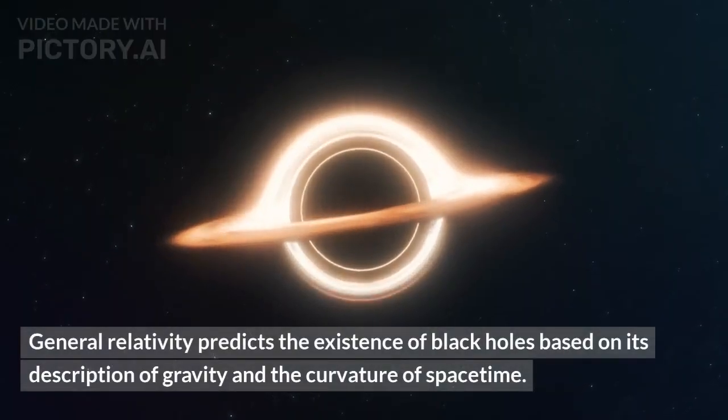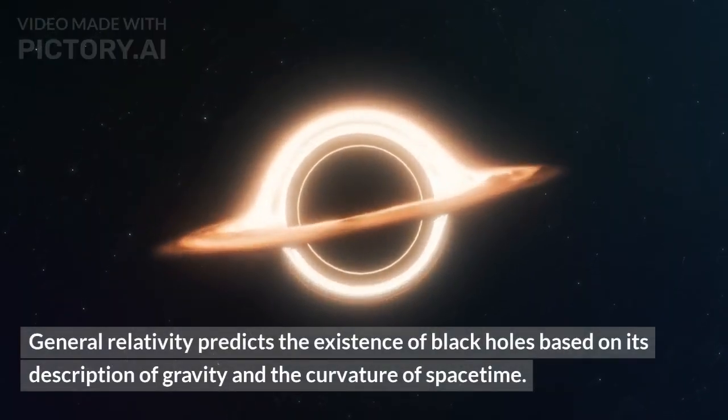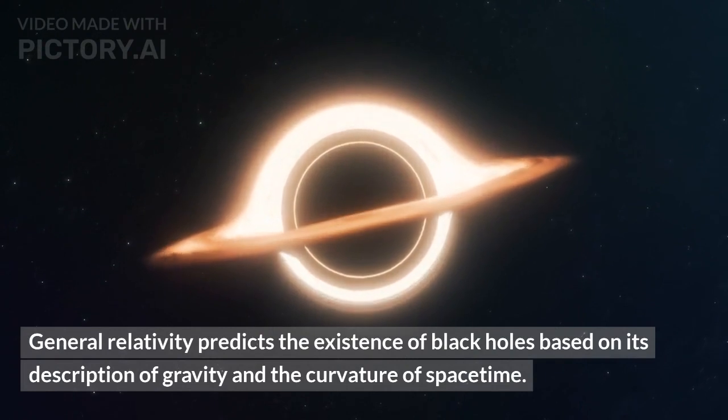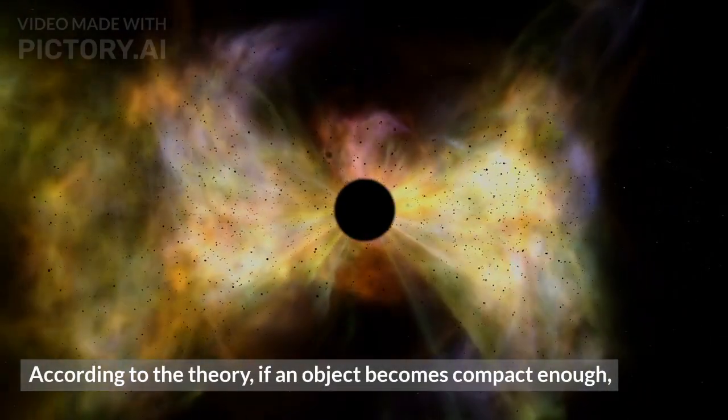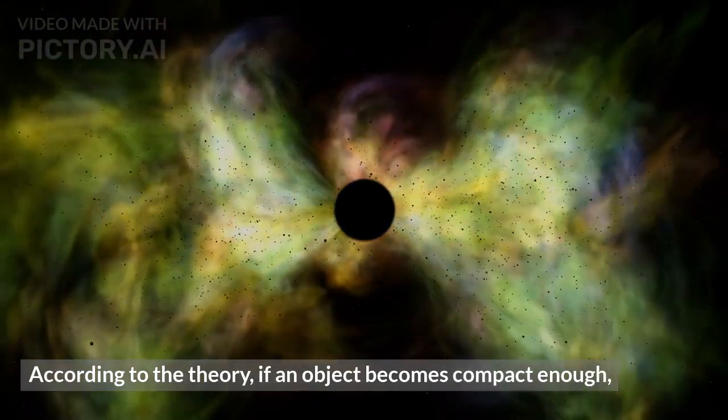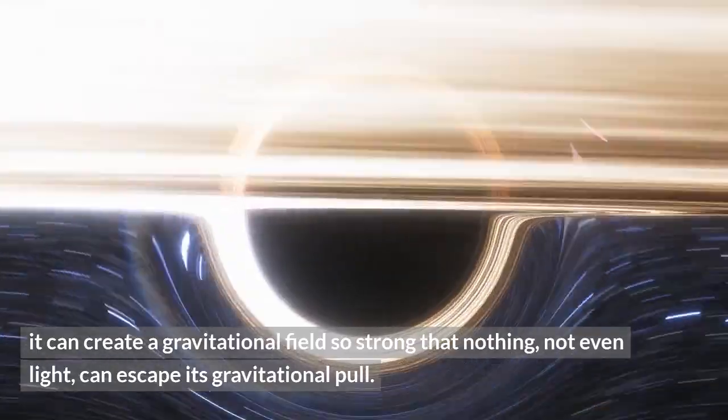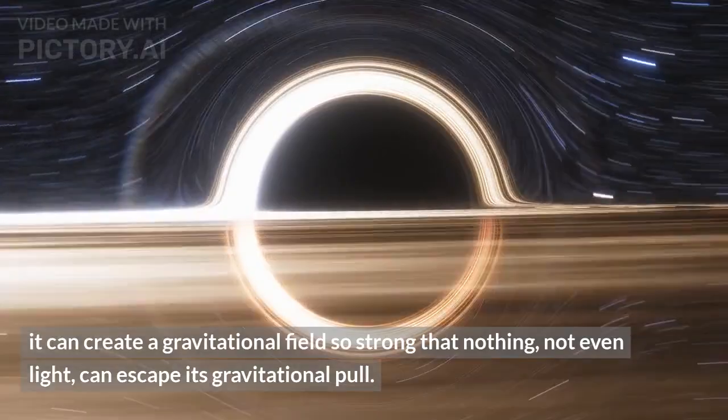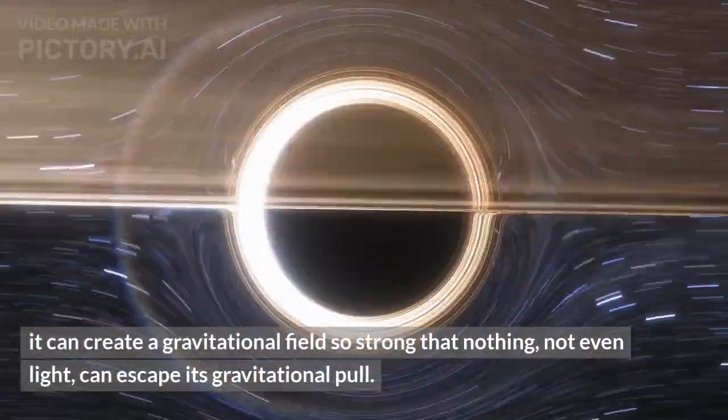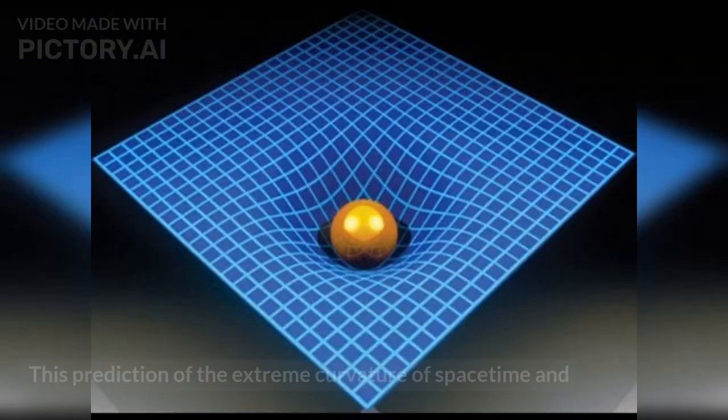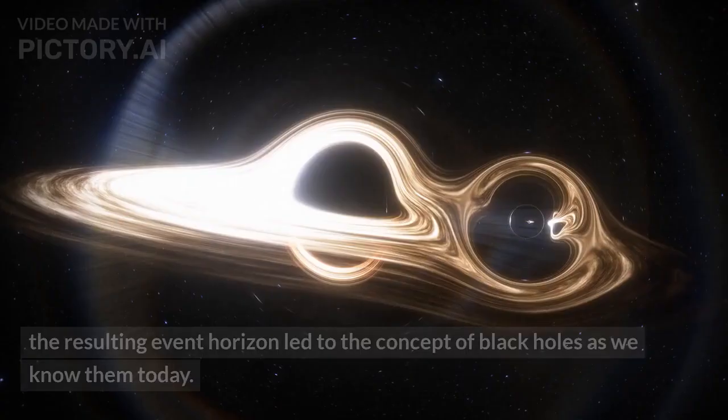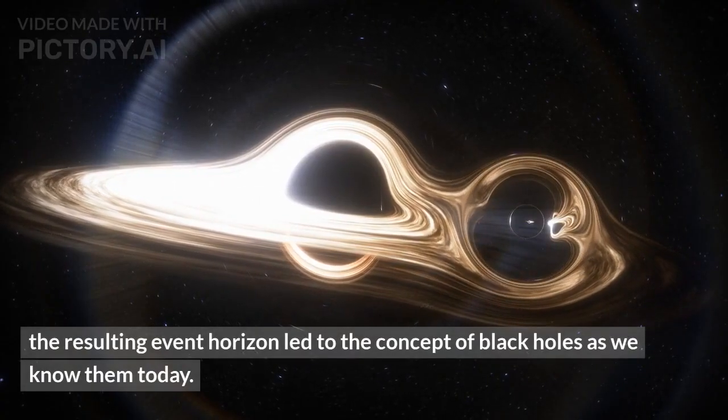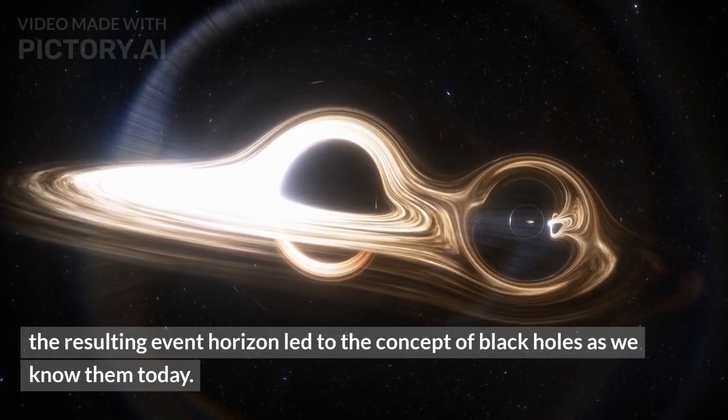General relativity predicts the existence of black holes based on its description of gravity and the curvature of spacetime. According to the theory, if an object becomes compact enough, it can create a gravitational field so strong that nothing, not even light, can escape its gravitational pull. This prediction of the extreme curvature of spacetime and the resulting event horizon led to the concept of black holes as we know them today.